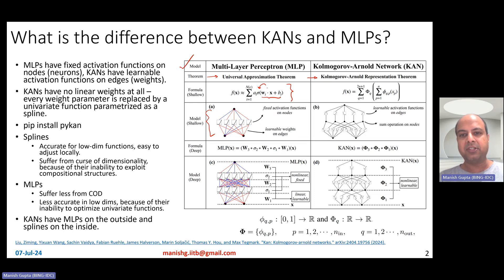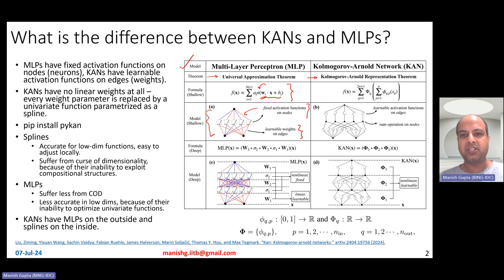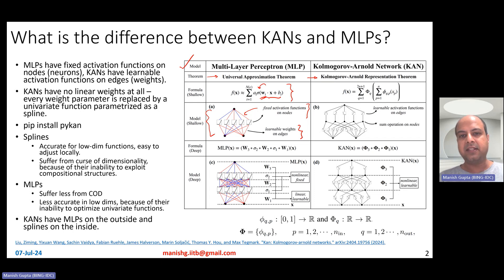In a typical MLP layer, there are integration function weights w_i which need to be learned — weights on the edges. Then you have a fixed activation function. Typically it could be a sigmoid, ReLU, or step function. These activation functions are typically fixed, they are on the nodes, and importantly you don't have any learnable weights in them — there's no learnability in activation functions.